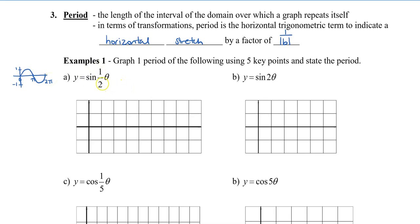When we look at this graph compared to y equals sine theta, there is a coefficient of one half. This one half gives us a horizontal expansion by a factor of 2. So if our normal period is 2pi, expanding it by 2 means the new period will be 4pi.